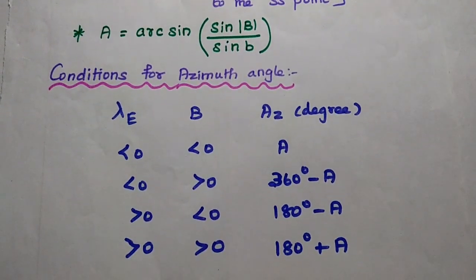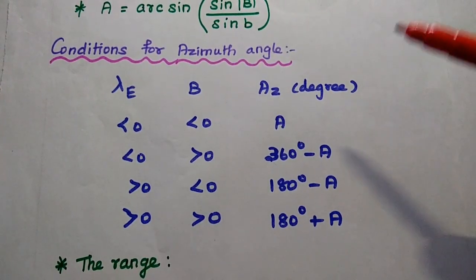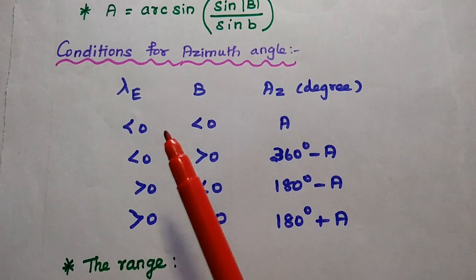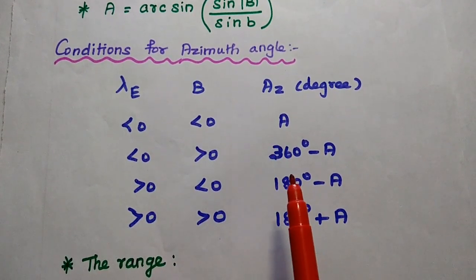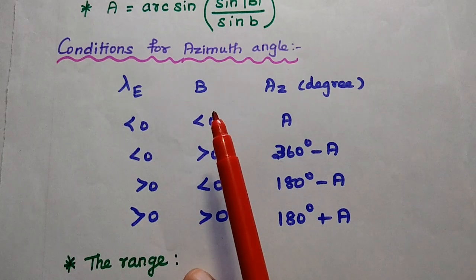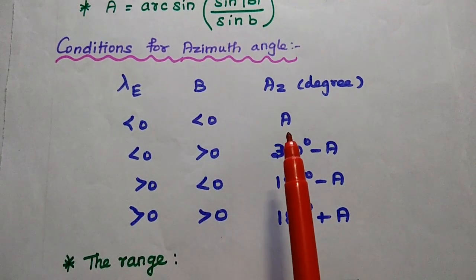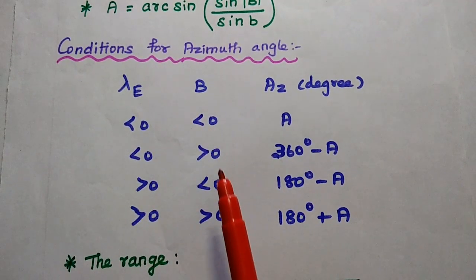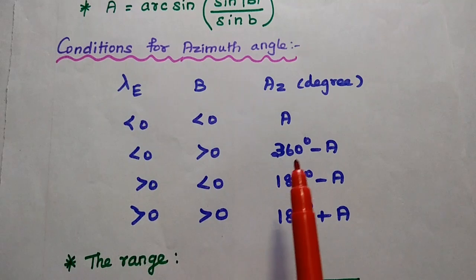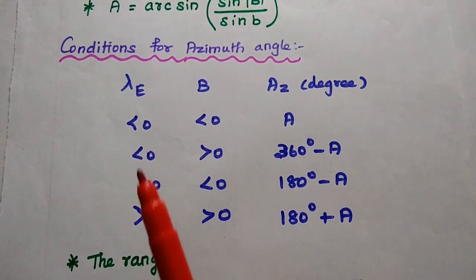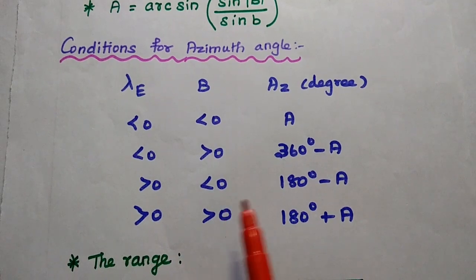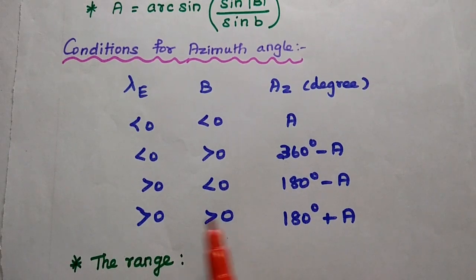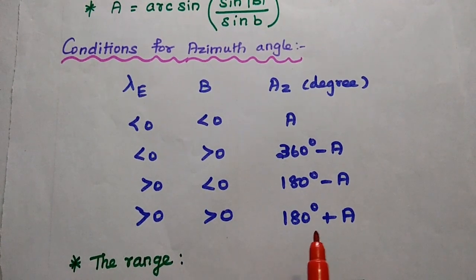Next are the conditions for the azimuth angle. From angle A, we can find out the azimuth angle using different formulas based on certain conditions — based on the values of lambda_e and B. If both lambda_e and B are less than 0, azimuth equals A. If lambda_e is less than 0 and B is greater than 0, azimuth equals 360° minus A. If lambda_e is greater than 0 and B is less than 0, azimuth equals 180° minus A. If both are greater than 0, azimuth equals 180° plus A.